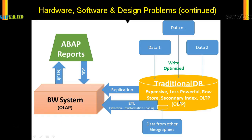As data started growing, the ABAP reports could no longer be used, so archiving strategies were introduced. Then SAP came with another innovation — a new system called the Business Warehouse, or the BW system.